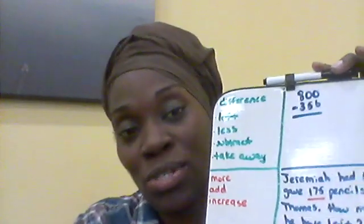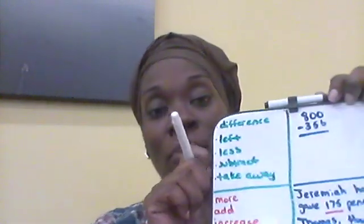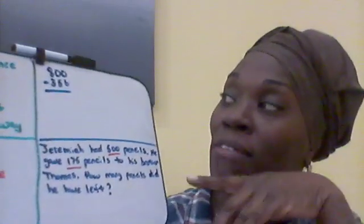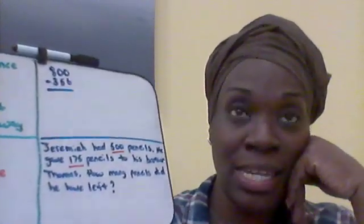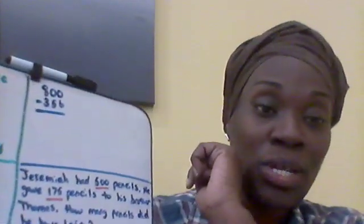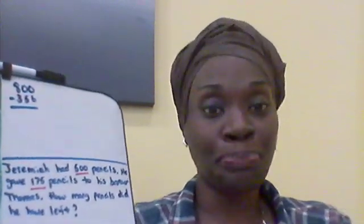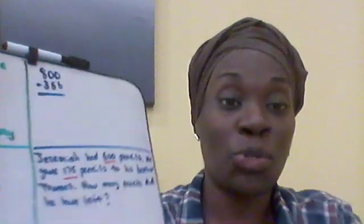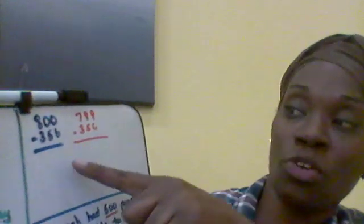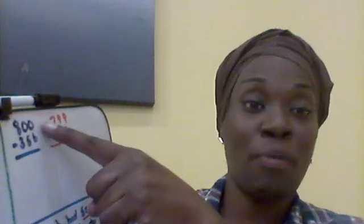So we're going to practice using the subtract-one method. We're going to start up here, and the number I have is 800. So if we have 800 and we need to subtract 356, the first thing we note is that it is 800. So in order to make it a number where there will be more on the top in each column than there is on the bottom, we're going to subtract one. So let's subtract one — seven hundred and ninety-nine minus three hundred and fifty-six. So instead of it being 800 minus 356, it's 799 minus 356. We used our mental math to subtract one, changed the zeros to nine, and subtracted one from the hundreds place.